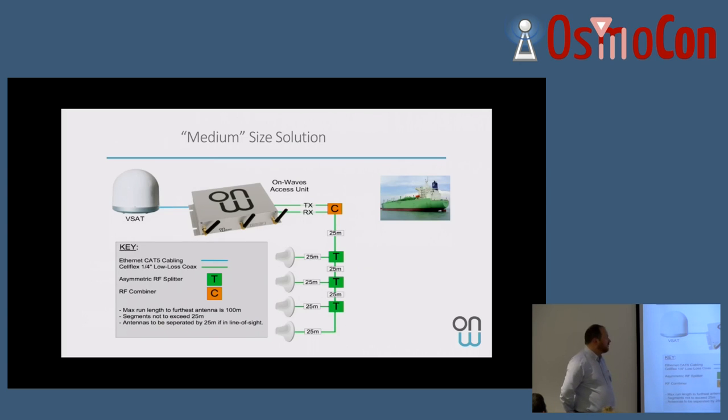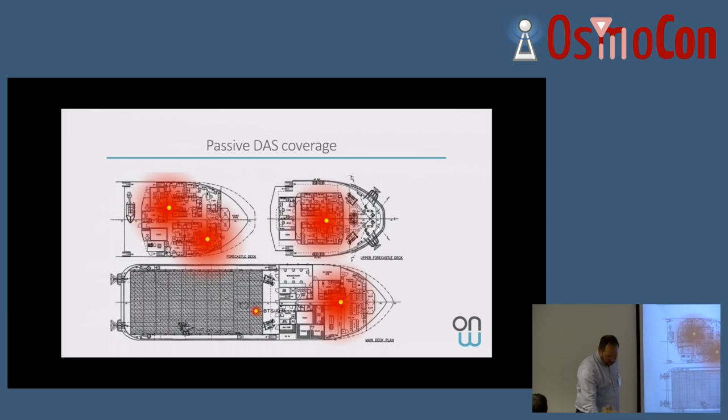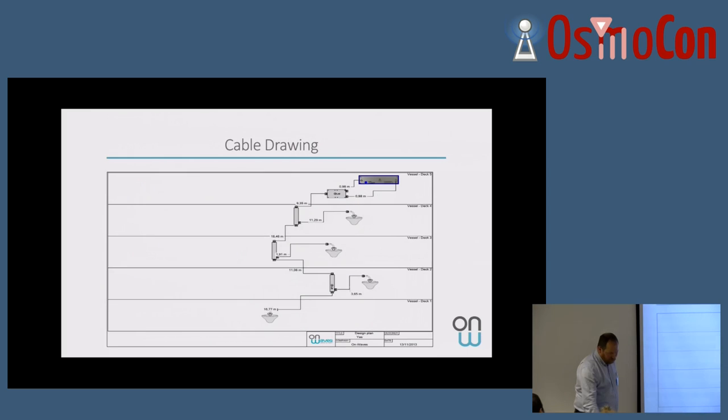Medium size solution. The maximum output power of the system of BTS is 23 dBm. With those 23 dBm, you can drive up to something like four or five antennas, providing coverage on each of the deck of the ship. Again, that's for a small, pretty small ship. So, that's what we call a passive DAS coverage.